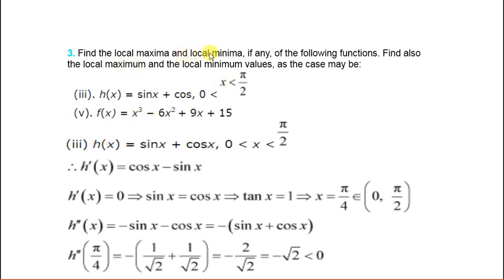So for maxima or minima we first find h'(x), that is cos x - sin x. Now to find the critical point we put h'(x) equal to 0. This implies sin x = cos x. Divide by cos x, you will get tan x = 1. And tan x = 1 when x = π/4. So x = π/4, and this π/4 lies in the given interval that is 0 to π/2.